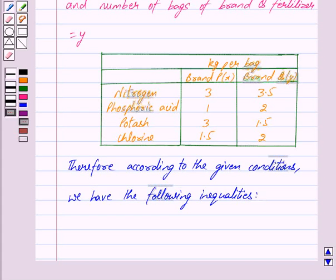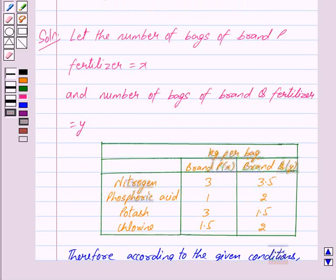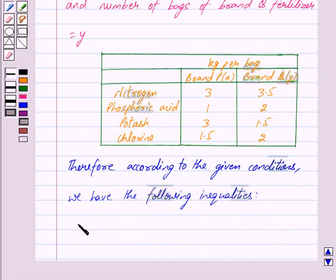From this table we can clearly see that brand P contains 3 kilograms of nitrogen, 1 kilogram of phosphoric acid, 3 kilograms of potash and 1.5 kilograms of chlorine per bag, and brand Q contains 3.5 kilograms of nitrogen, 2 kilograms of phosphoric acid, 1.5 kilograms of potash and 2 kilograms of chlorine per bag. X bags of brand P will contain X kilograms of phosphoric acid and Y bags of brand Q will contain 2Y kilograms of phosphoric acid, so the total amount of phosphoric acid is X plus 2Y, and this should be greater than or equal to 240.